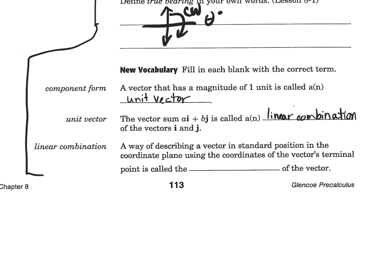Which means that a way of describing a vector in standard position in the coordinate plane using the coordinates of the vector's terminal point is called the component form.